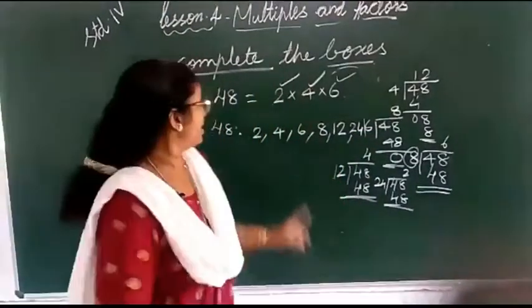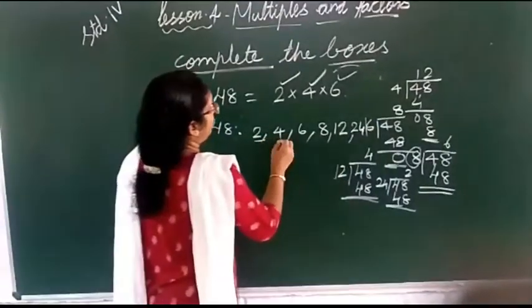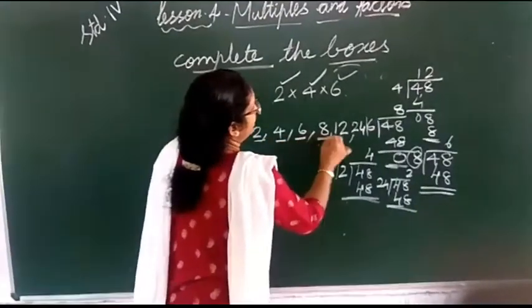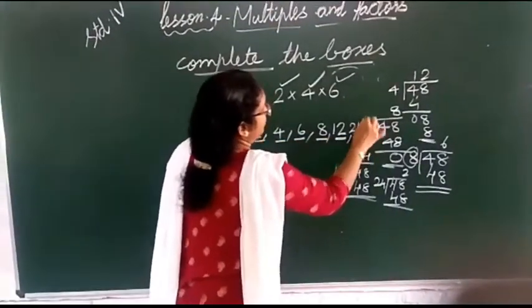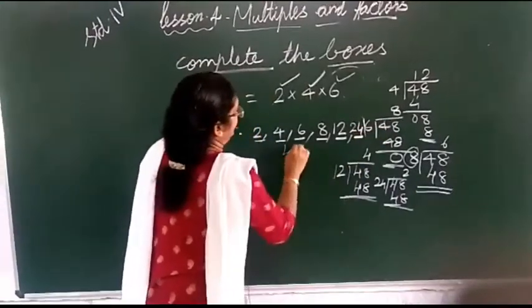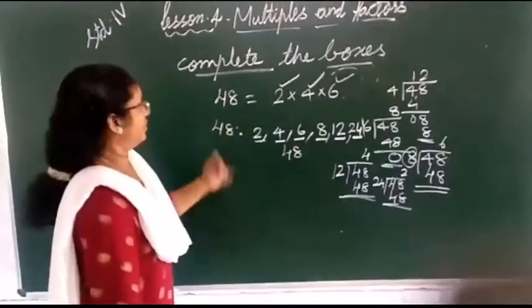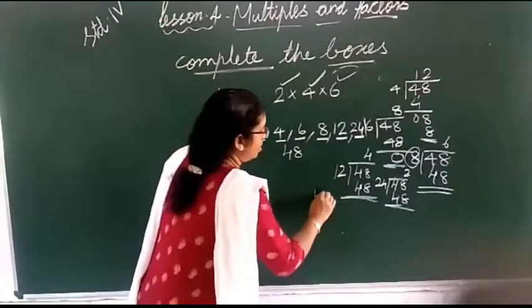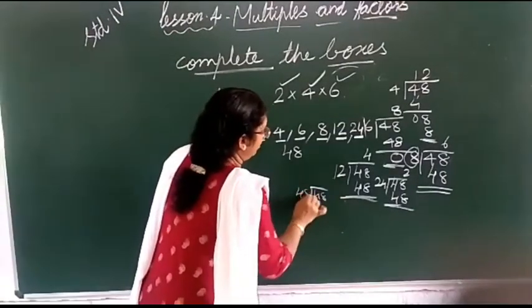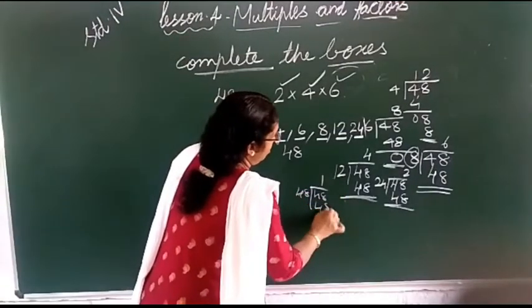Let's do multiple. 48 is equal to multiple. 2, 4, 6, 8, 12, 24, 48. 48. How many? 48. Only one. 48 into 48, only one. 48.